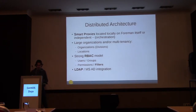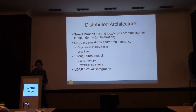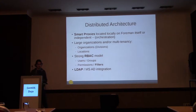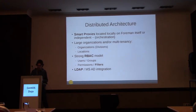Smart proxies do most of the heavy lifting. They talk to your DHCP server or DNS servers, so Foreman doesn't have to be inside every network — it is just a central server and distributes the actual workload to the proxies. There is support for organizations and locations — this is optional. There is also a strong role-based access control system to separate access. You can also use LDAP and Active Directory for authentication.